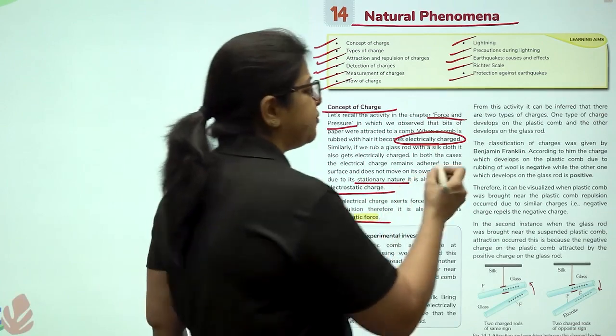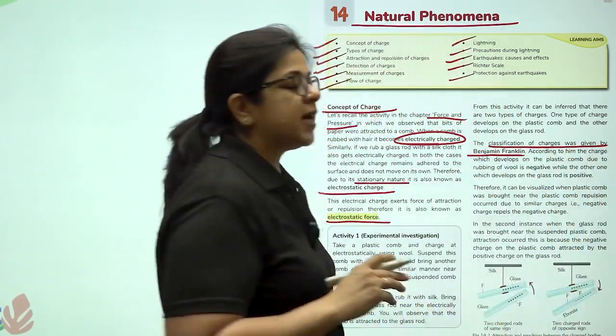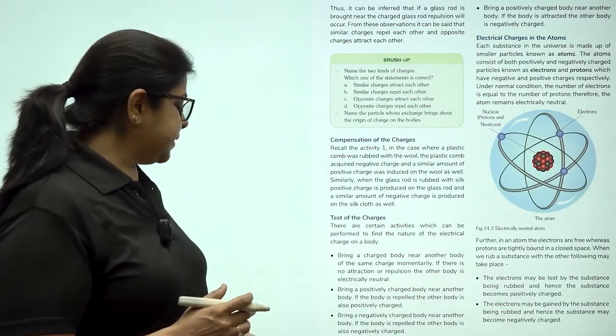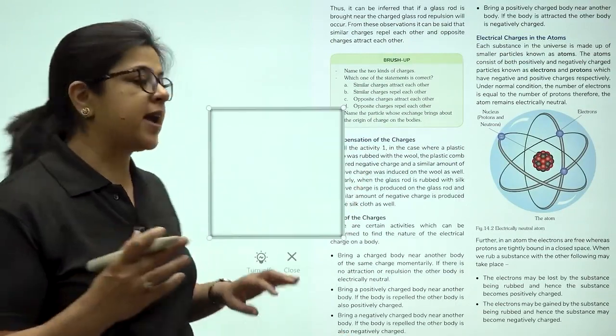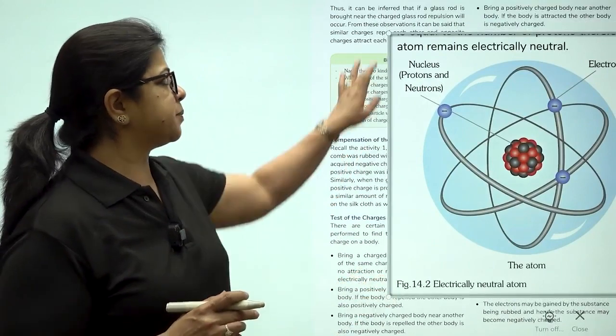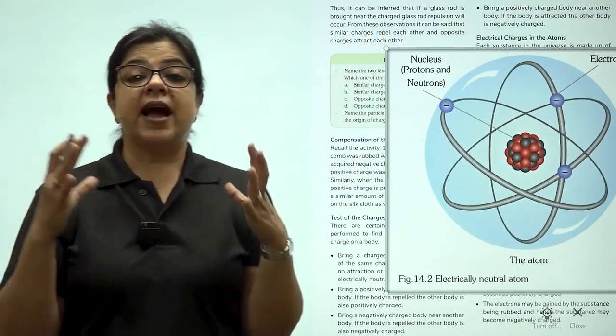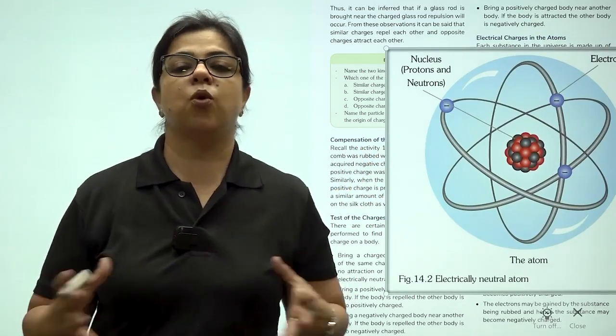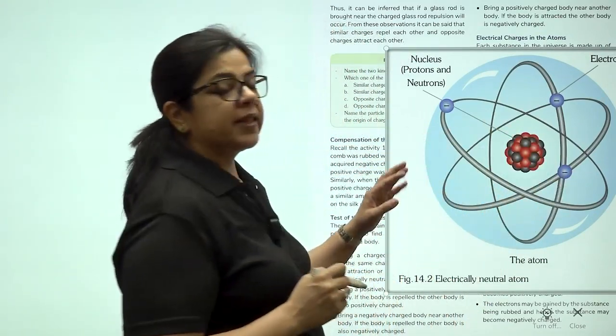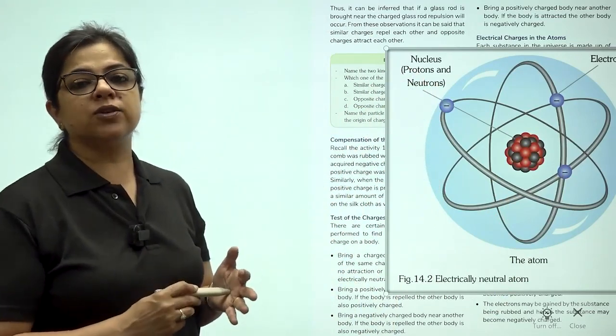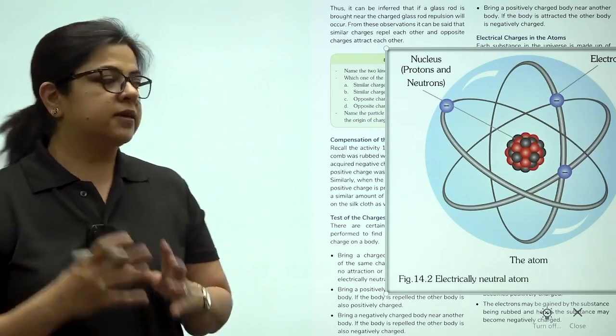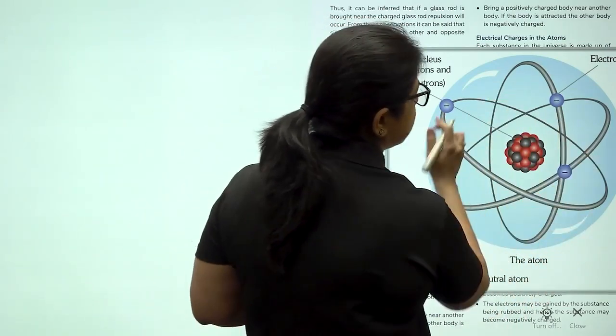Children, Benjamin Franklin was the first person who classified charges as negative and positive. Now let's understand with an example here how these charges actually build up. This is the picture of an atom. An atom is the tiniest particle that makes up all life. In this atom there is a center known as nucleus. Nucleus has got two kinds of particles inside it - protons are positively charged particles. Outside the nucleus there are many orbits.